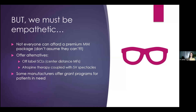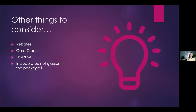Some manufacturers offer grant programs for patients in need. Other helpful things to consider: rebates, manufacturer rebates, CareCredit, HSA, FSA. You'd be surprised how many parents forget about their HSA and FSA or don't realize it can be applicable to eye care. A few years ago I started adding a low-cost pair of glasses in the package, and parents were like, 'My kid gets a whole year supply of contact lenses, a pair of glasses, and all this care for this price?' That all-inclusive package — the care plus all the optical devices they need for their child to see — really made a difference.